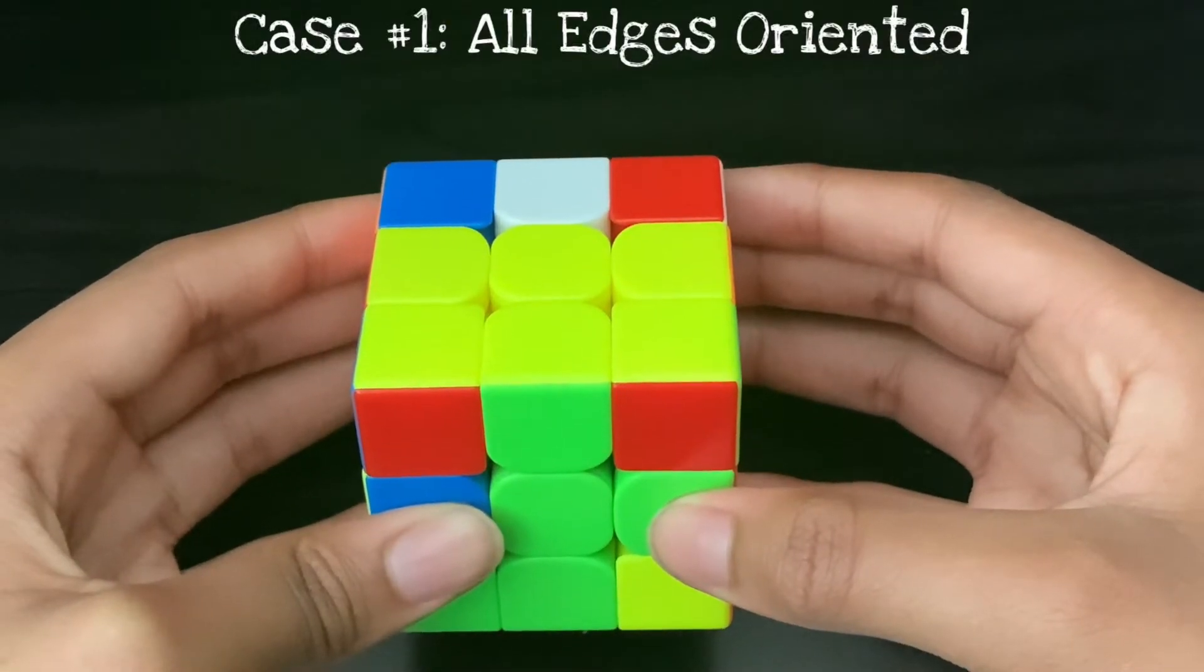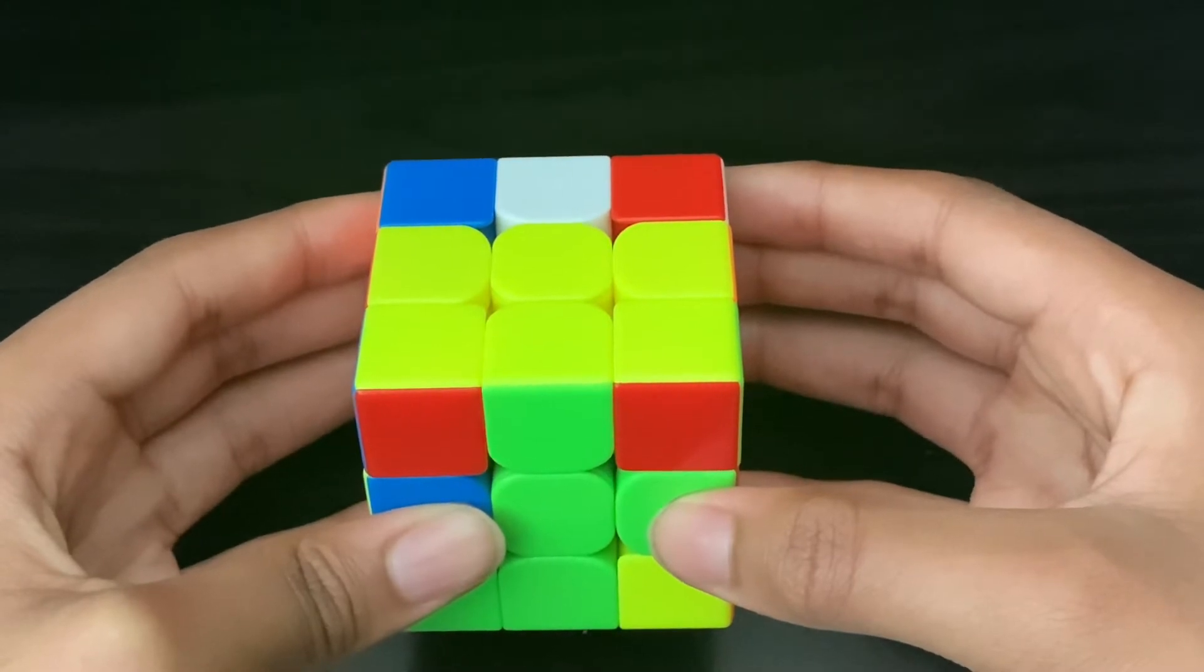The first case is when you have all edges oriented. When you get this, you can immediately rotate and finish off your F2L.